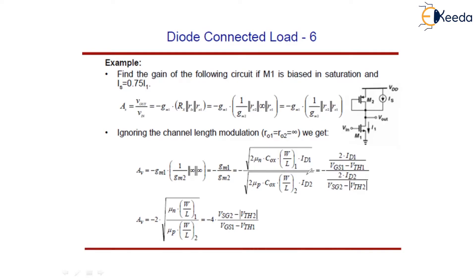IS is given as 0.75 times ID1. The current in the PMOS diode-connected device, ID2, will equal 0.25 times ID1, because ID2 and IS together make up ID1, so ID2 equals ID1 minus 0.75·ID1 equals 0.25·ID1.